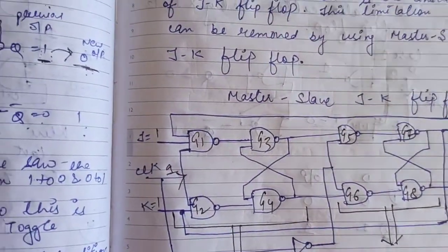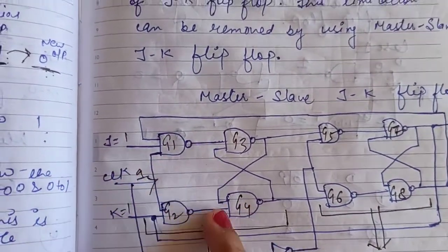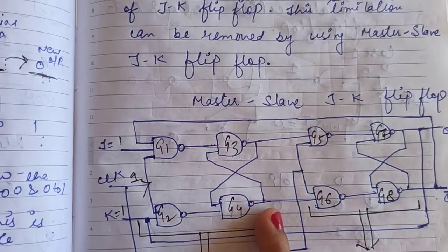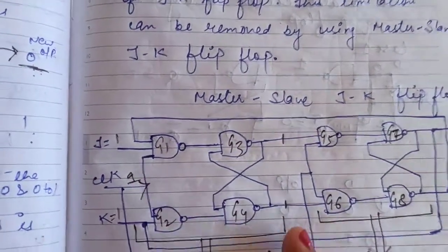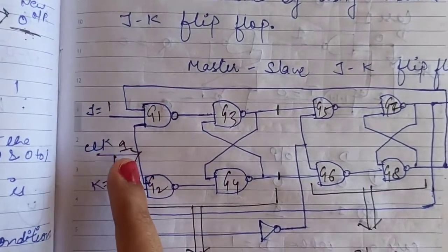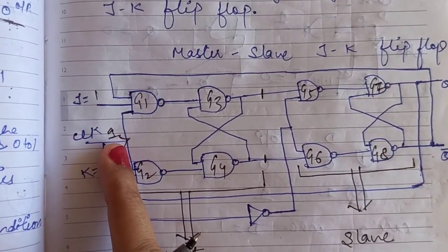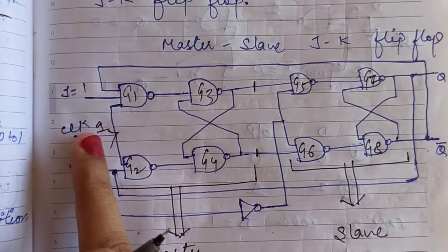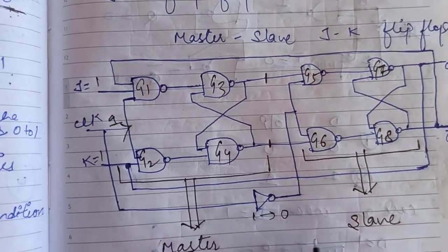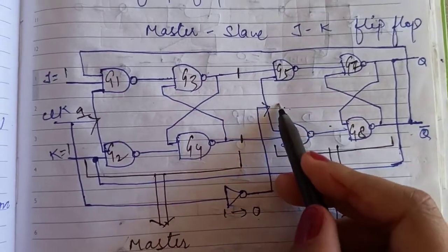When the input is 1, it takes feedback from the output, produces some output, and this output is generated by the master circuit. However, it will not go forward. The output will not go forward because when the clock pulse is 1, the master circuit is working. When we give zero clock pulse, the master circuit will not work. The NOT gate converts the 1 clock to zero, and this zero clock pulse goes to the slave circuit.